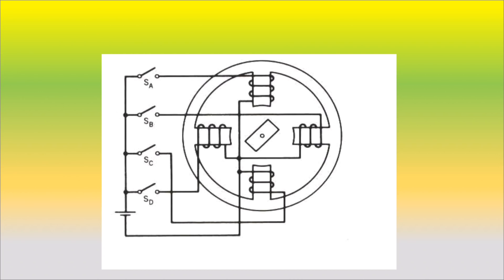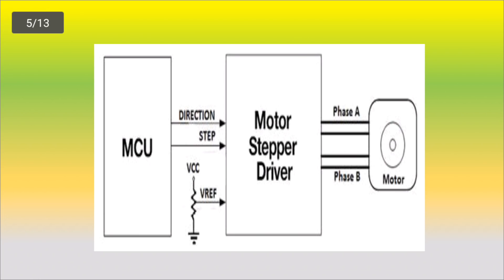This is the power electronic devices, like MOSFET and BJT. These devices are used. This is the external device — this is the stepper motor driver. This is the power electronic switch. This is the MOSFET. This is the voltage.